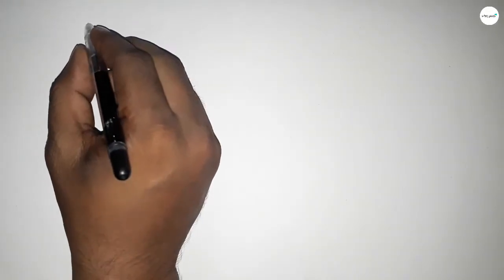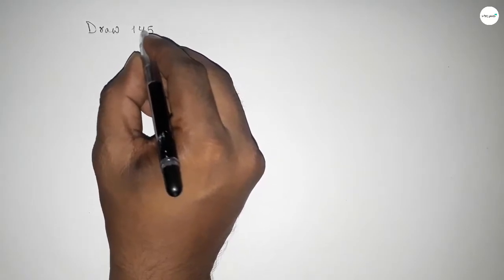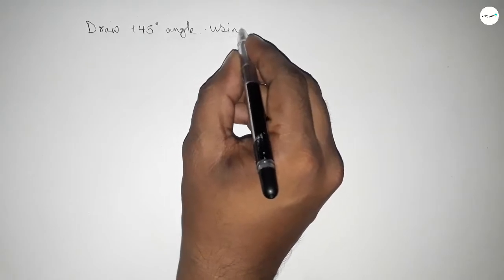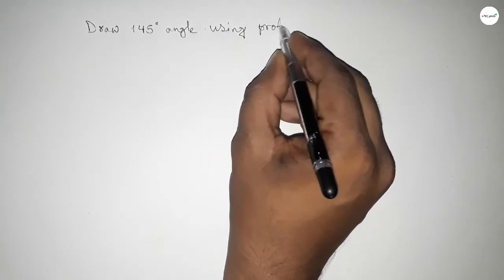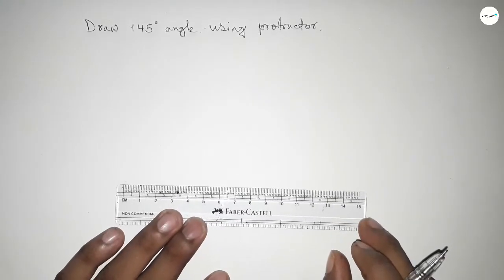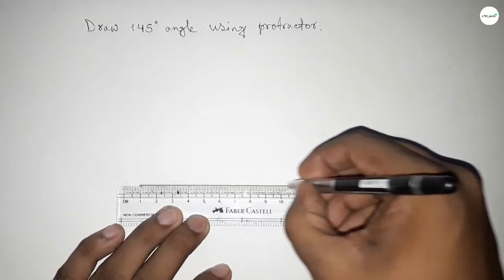Hi everyone, welcome to SI Share Classes. Today in this video we have to draw a 145-degree angle using a protractor. So constructing a 145-degree angle by using protractor - let's start the video. First of all, draw a line of any length here.